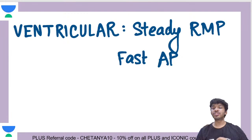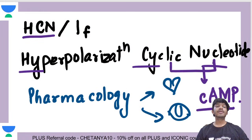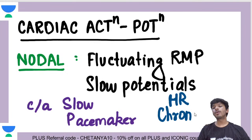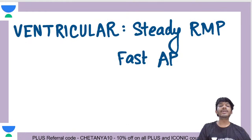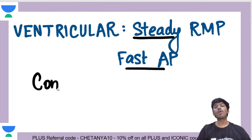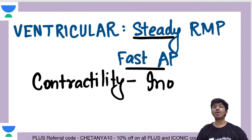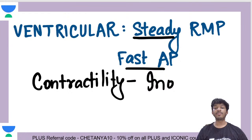Now let's talk about ventricular action potentials, also called fast action potentials. These have a steady resting membrane potential and are related more to contractility of the heart — inotropy. The resting membrane potential of a ventricular muscle fiber is approximately −90 mV. The nodal potentials are related to heart rate — chronotropy — while ventricular action potentials relate to contractility.